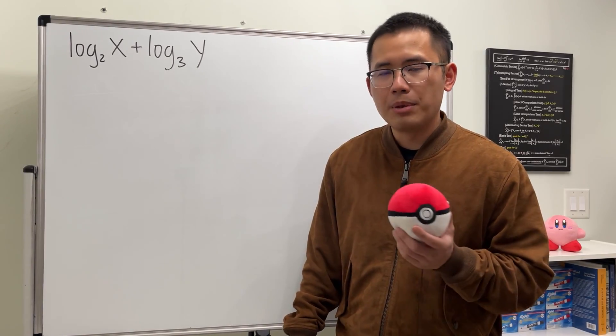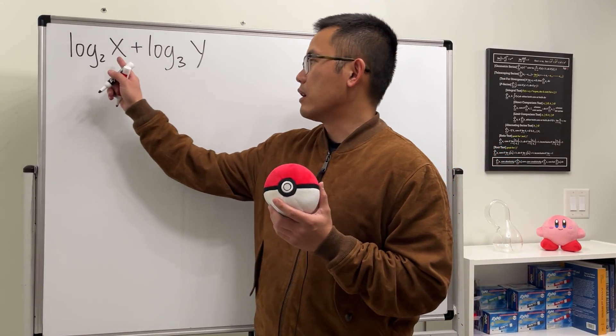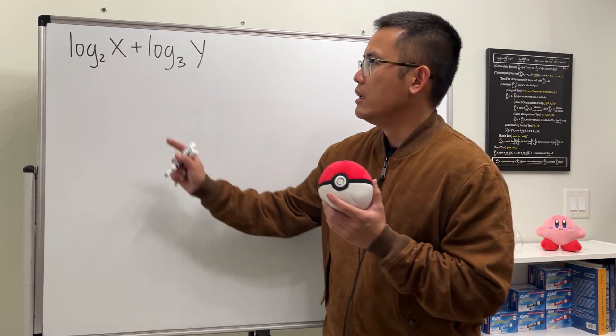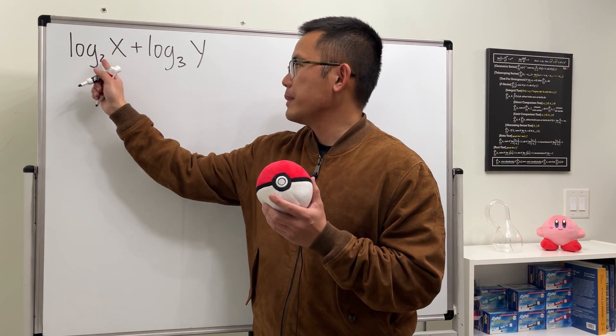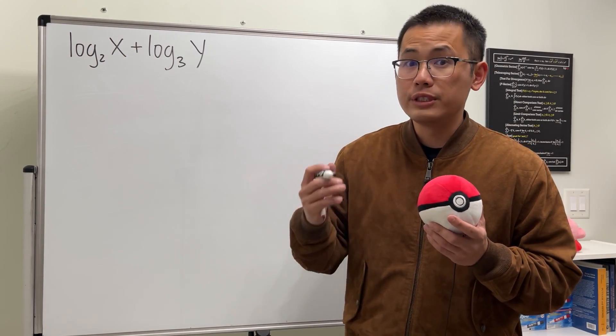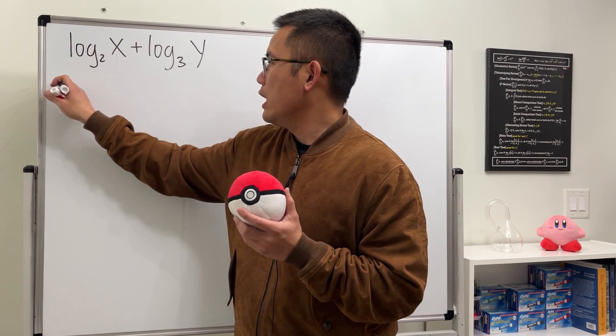A lot of people will tell you we cannot combine logarithms if the bases are different, but the truth is we can actually do it. Let me show you how. For the first one, we see we have log base 2 of x. Well, we can use the change of base formula, and let's use natural log.